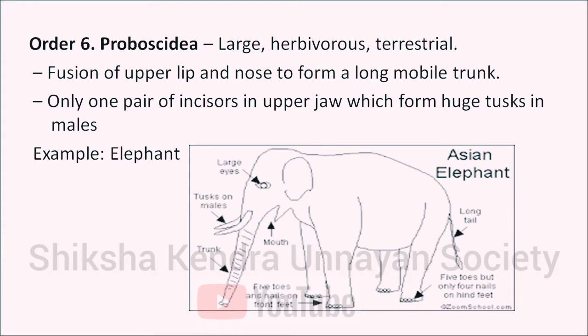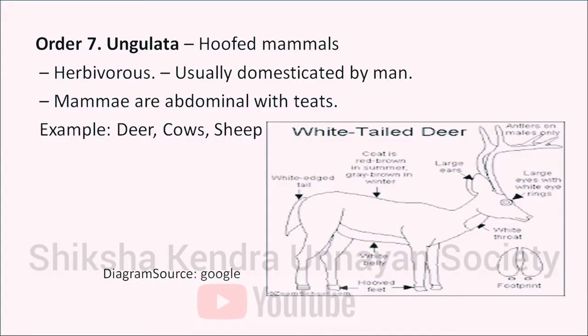The next order is Proboscidea — large herbivorous terrestrial animals in which the upper lip and nose are fused to form a long mobile trunk. Only one pair of incisors in the upper jaw form huge tusks in the male. Example: elephant. The next order is Ungulata — hoofed, herbivorous mammals usually domesticated by man, with mammary glands and teeth. Examples: deer, cows, sheep. Today we discussed Kingdom Animalia, their phyla further into classes and orders. Thank you.